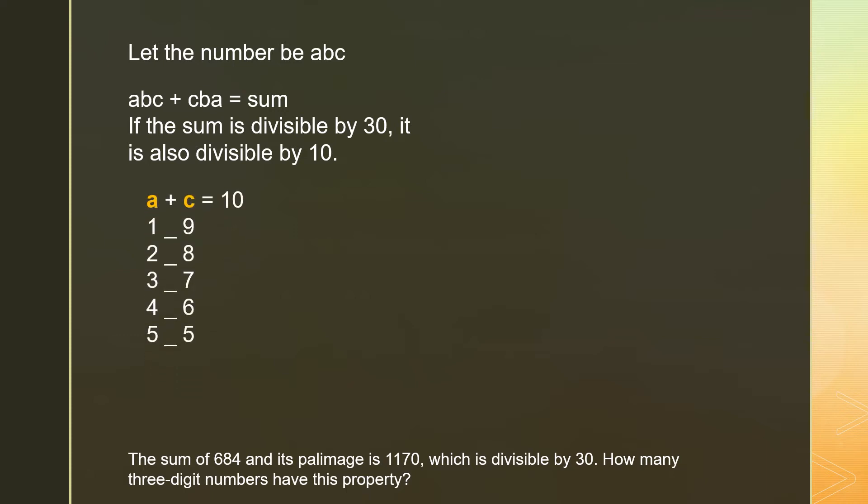If the sum is divisible by 10, that means the last digit of the sum is 0. That means A plus C equals 10. Then A and C can be 1 and 9, 2 and 8, 3 and 7, 4 and 6, or 5 and 5.